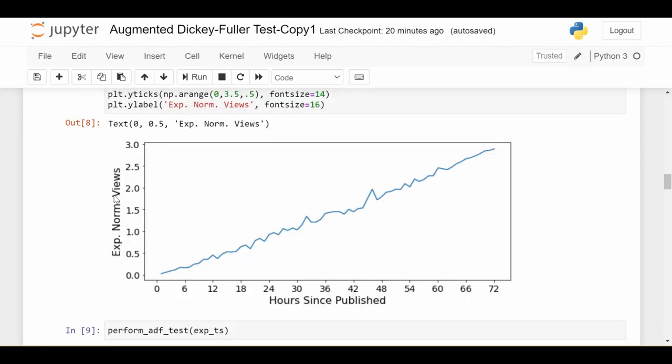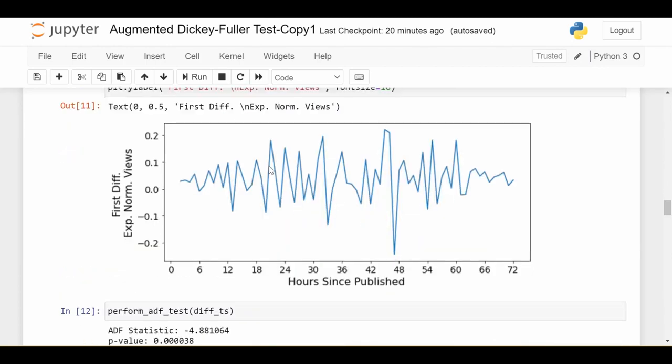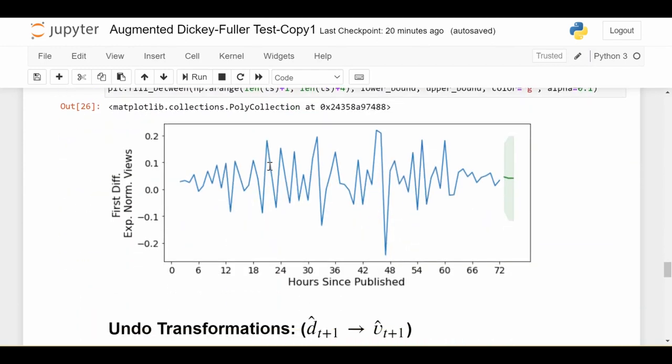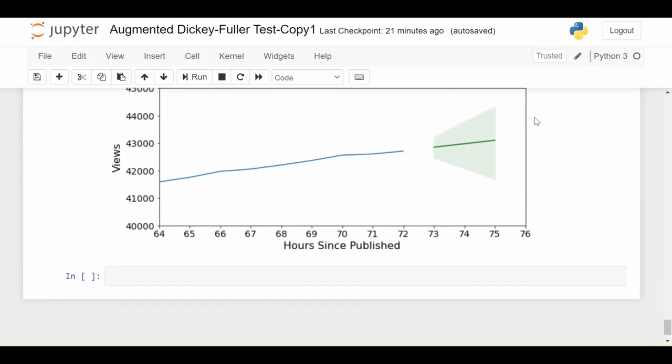In a nutshell, this video was about how to take an arbitrary time series, do transformations to induce stationarity, build a model for that transformed time series, do predictions, and then undo the transformations to get predictions for the original time series. This is typically what you'll have to do in any real time series problem because the series you're given is likely not stationary. You have to keep track of the transformations and think about how to undo them. This code will be available online, as well as the data. If you have any questions, leave them in the comments. Please like and subscribe, and I'll see you next time.